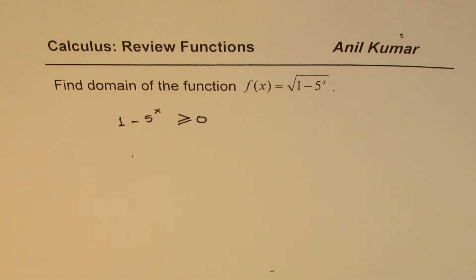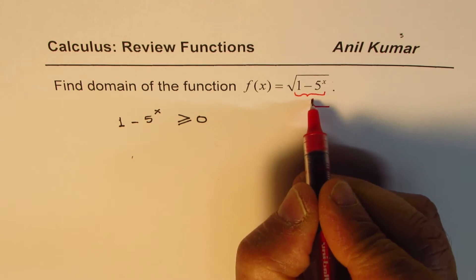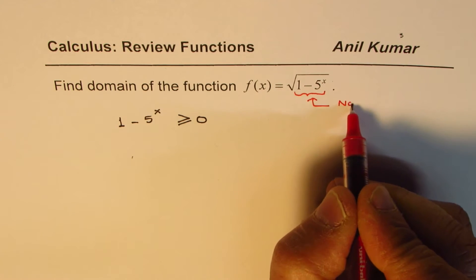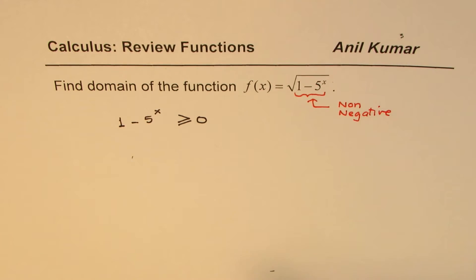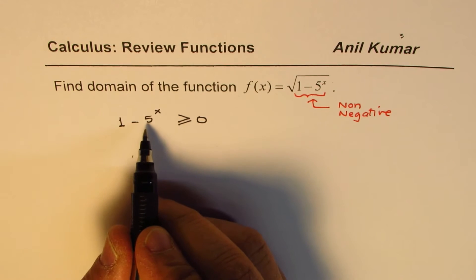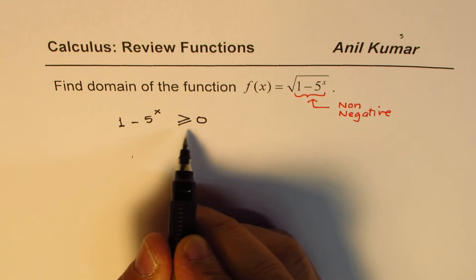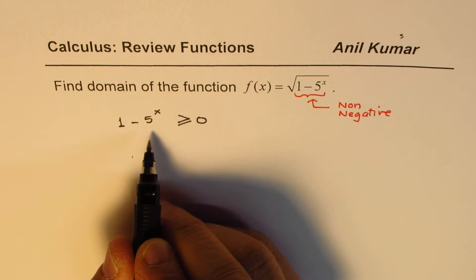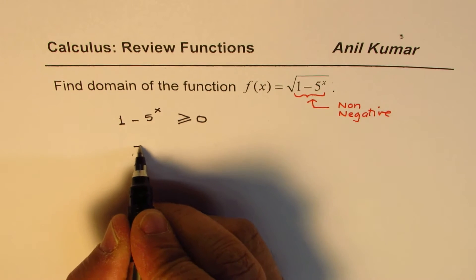That is important, so let me make a note here that this portion, whatever is there within the square root, should be non-negative, and that should give you the solution. Now we can actually solve this. I'll do it in more steps than required by taking 1 to this side.